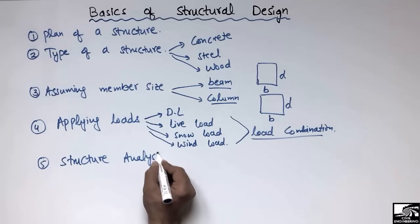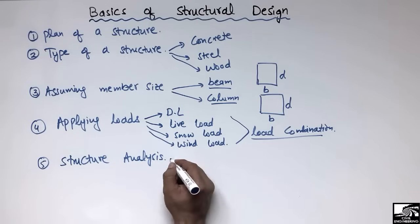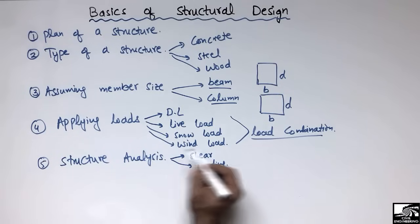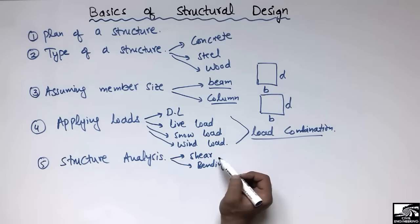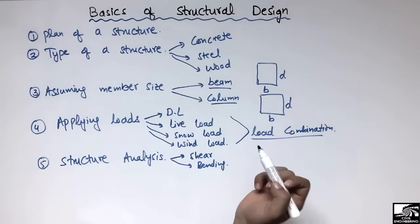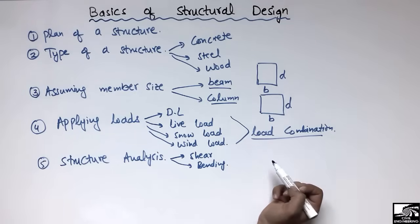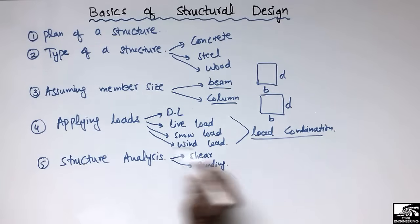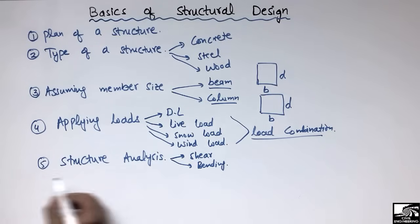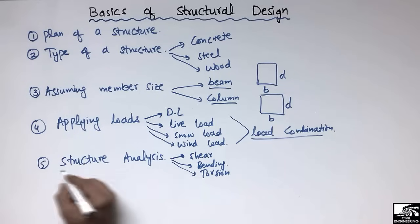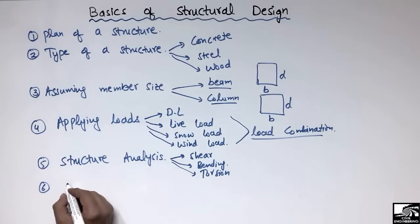The fifth step is structural analysis. In this step we perform analysis on the structural members — for example, analysis for shear force and bending moment. We get shear diagrams and bending moment diagrams for the beams and columns, and check how the bending moment and shear vary throughout the structure. We also consider torsion and other types of stresses.